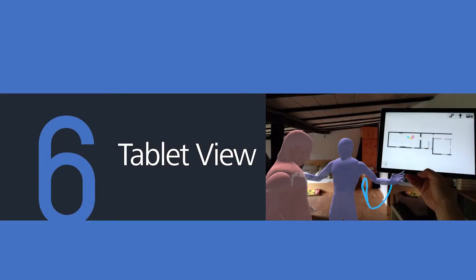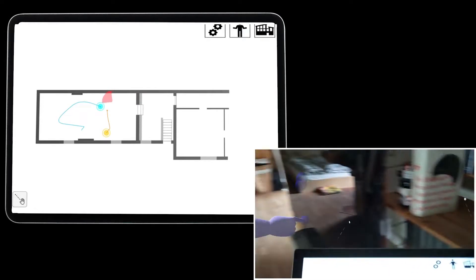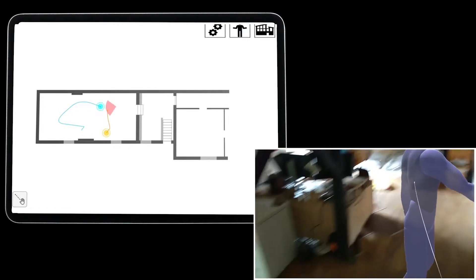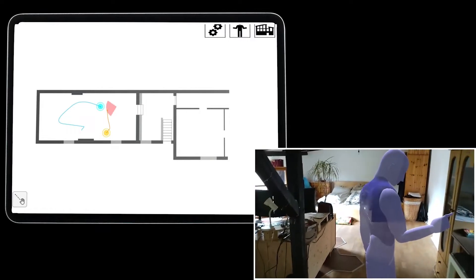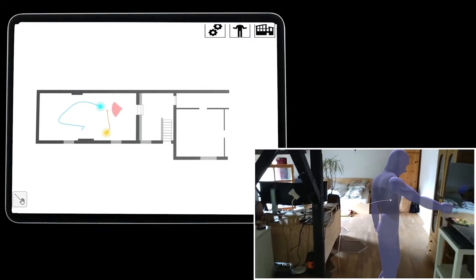Tablet view. Avatar utilizes the tablet device as a control interface, in addition to mid-air gestures in AR. The tablet provides an overview of the environment on a 2D floor plan, showing 2D trajectories and the current positions of avatars in the playback.